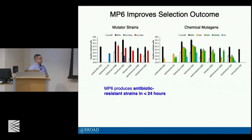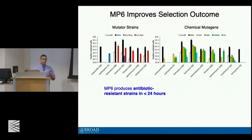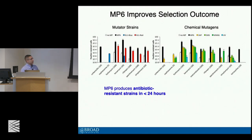To benchmark these mutagenesis plasmids, we showed that MP6, compared with mutator strains — strains for which many of these pathways have been constitutively removed or inhibited, which are constitutively mutators and not particularly happy because their genomes deteriorate as they grow — as well as chemical mutagens, which offer very narrow mutagenesis spectrums and restrict access to given genotypes, the black bars for MP6 are typically higher and in many cases much higher than the next best mutator strain or chemical mutagen. This suggests this mechanism of mutagenesis would be really useful for evolving novel functionalities.